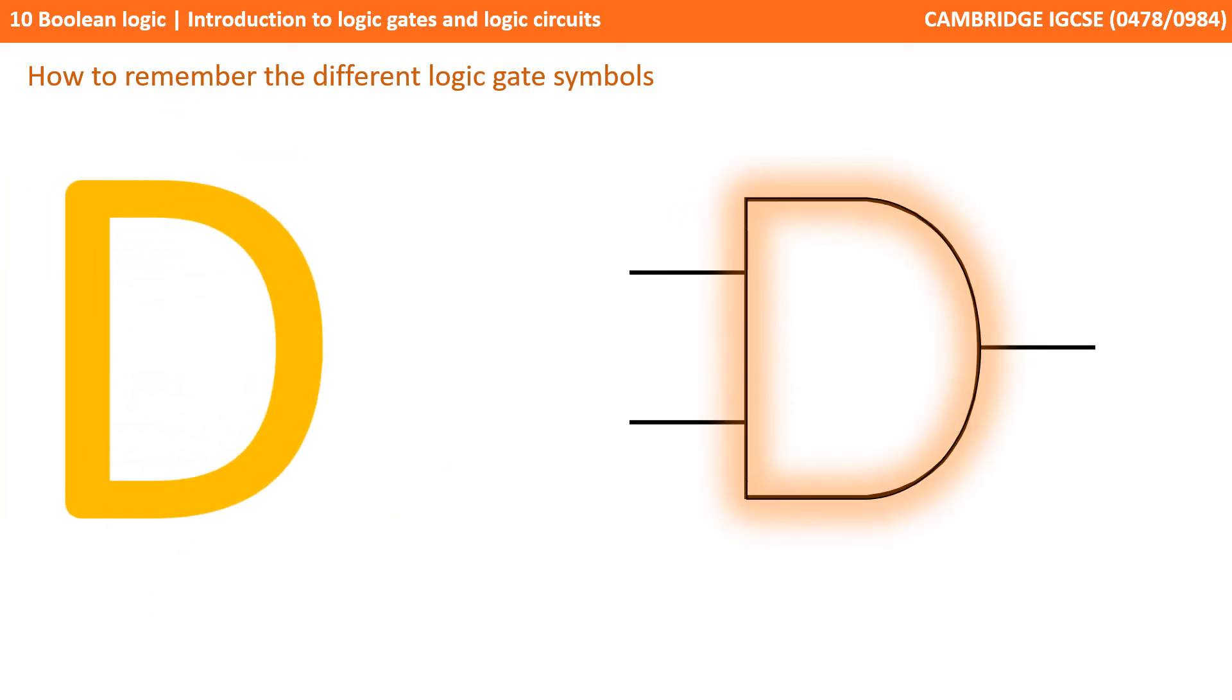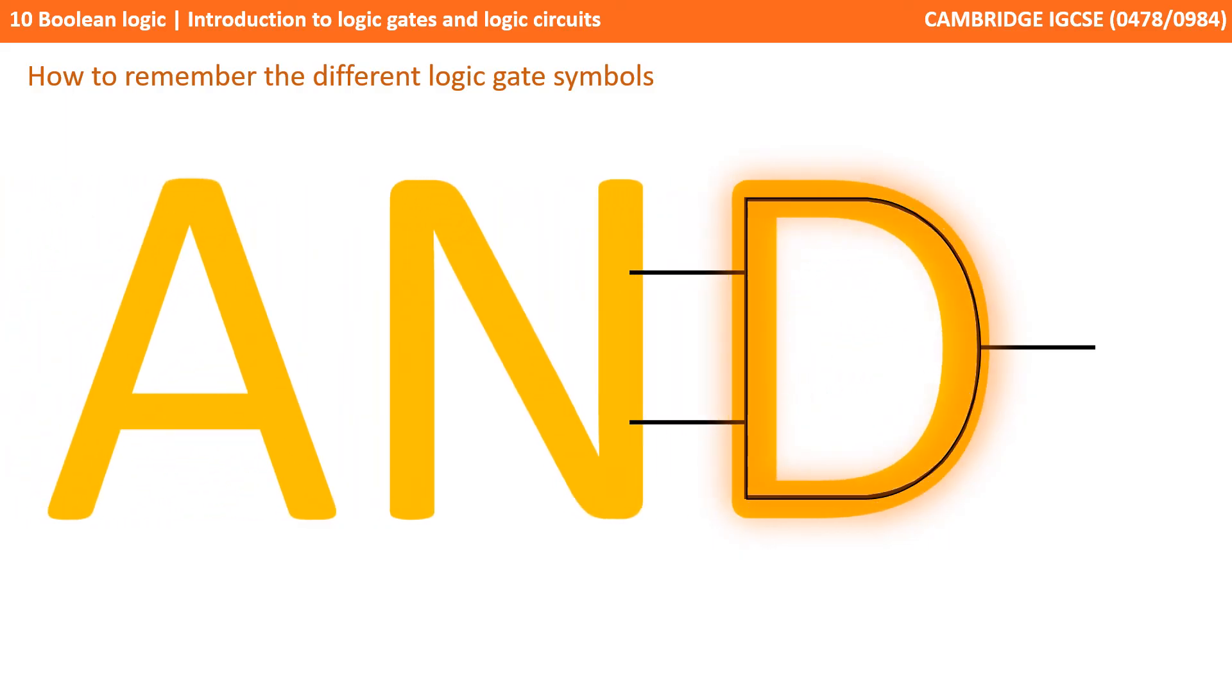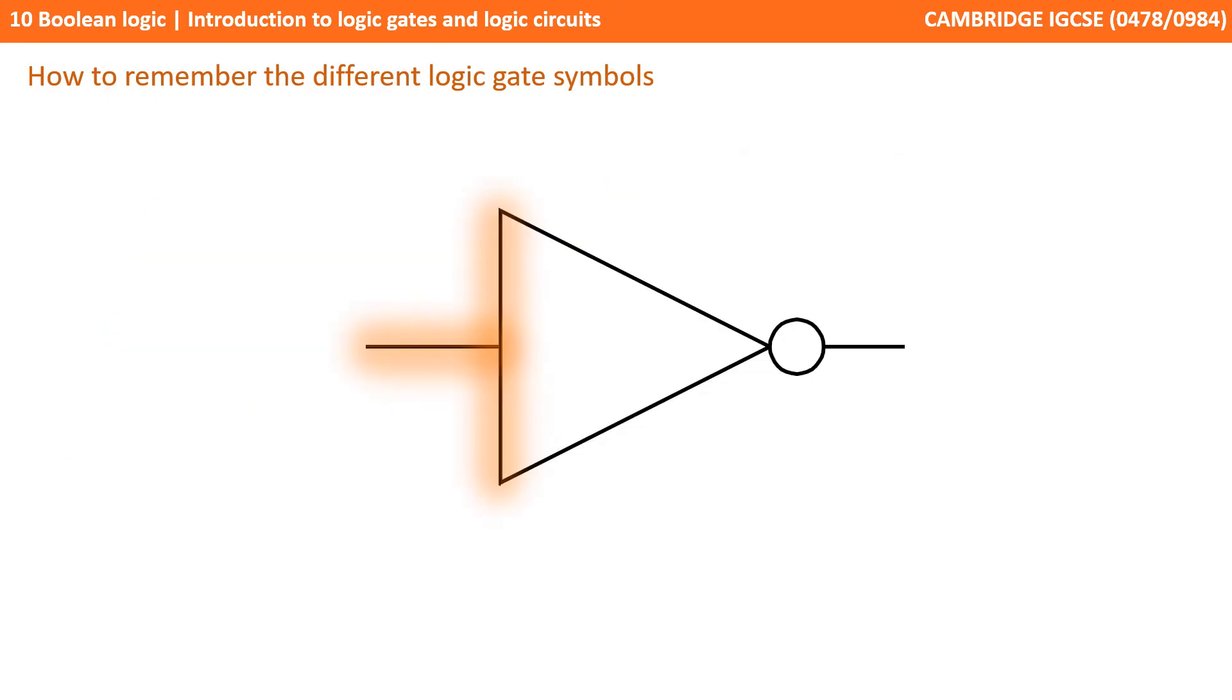The NAND gate, I tend to remember that by thinking of the capital letter D on the end of the word AND, forming the straight line and the curve for the AND symbol. The NOT gate, I tend to think of the letter T, the capital letter T on its side. And this is a handy way of remembering it's the only gate with a single input.